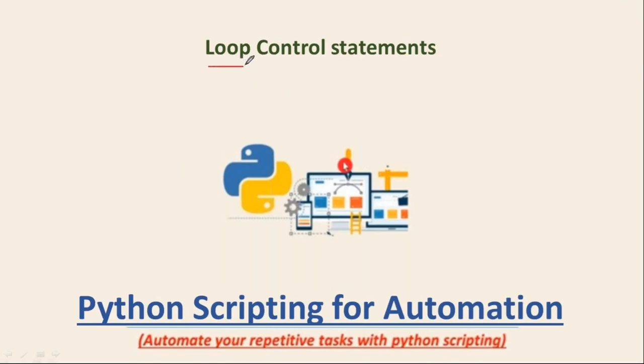Here we are going to discuss about loop control statements. Basically we have two types of loops in Python: the for loop and the while loop. We know that loops are going to repeat for n number of times based on your condition — sometimes one time, sometimes three times, sometimes a hundred times — you are going to repeat your logic or iterate some n number of times.